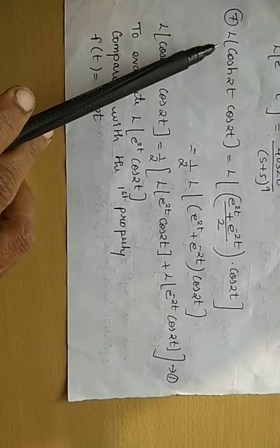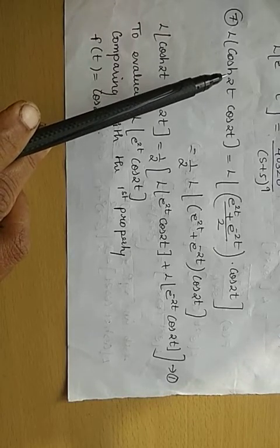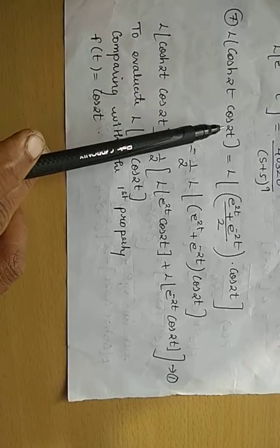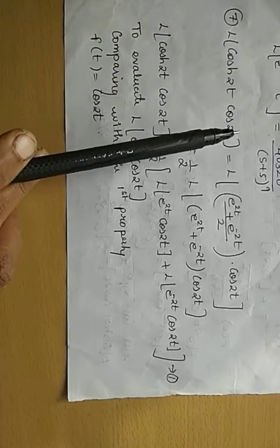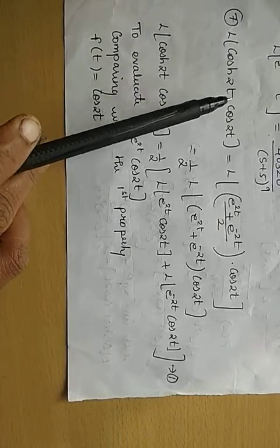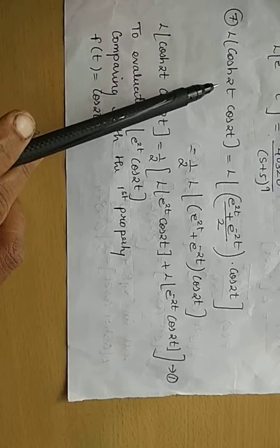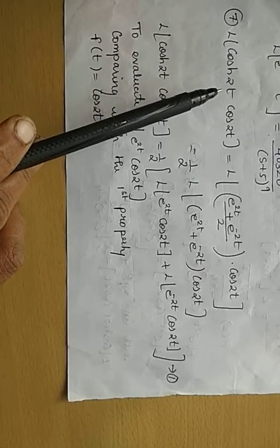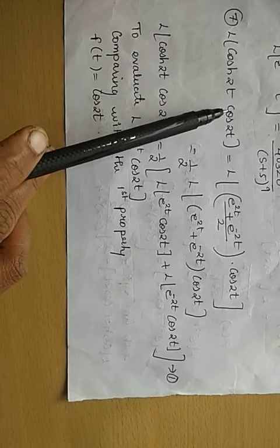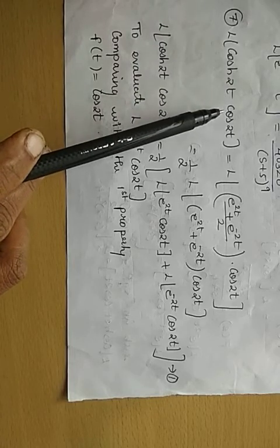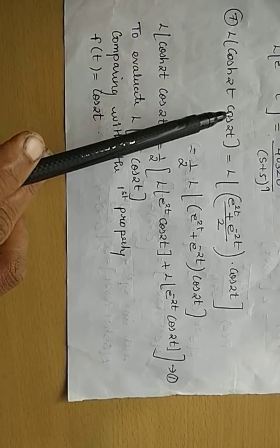Now how do we proceed? Whenever we have an exponential function multiplied by f(t), we apply the first shifting property. But here there is no e to the power of something, so we cannot apply the first shifting property. Also, if a product of two trigonometric functions appears, I would ask you to apply transformation formulae.